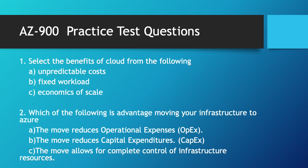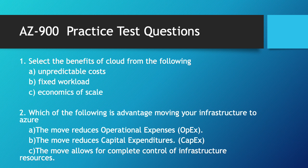Let us see some AZ-900 practice test questions. First one: select the benefits of cloud from the following. The correct answer is economics of scale. Economics of scale means that when we buy at large scale, the cost per unit will be reduced. For example, Walmart purchases products from vendors at large scale and the cost per unit is reduced. Similarly, cloud providers purchase computing services at large scale and that saving is ultimately propagated to organizations. The correct answer is C.